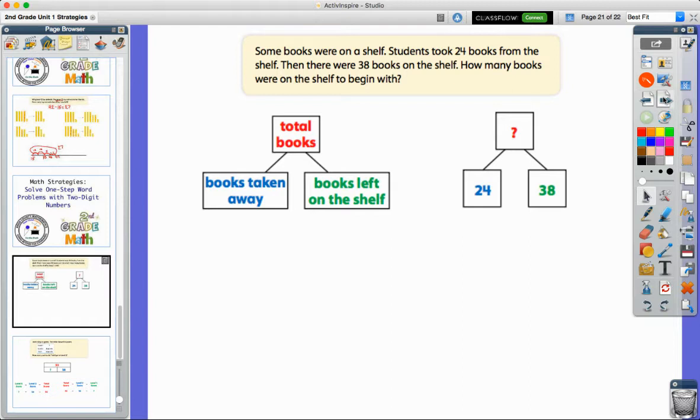One of our strategies we've used to make sense of these word problems is to close our eyes and picture the actions taking place. So if you want to, you can close your eyes while I read through this problem again. I want you to picture what's happening in the story. So it starts off with some books were on a shelf. So I can close my eyes and picture a bookshelf full of books. Maybe it's in the library at school.